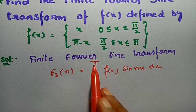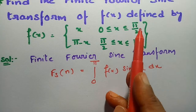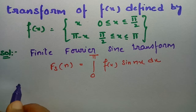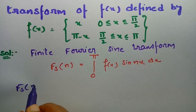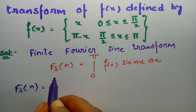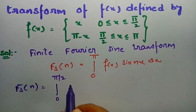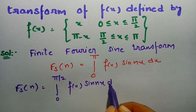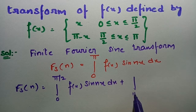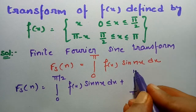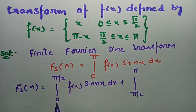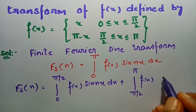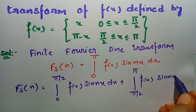In between 0 to π there is another limit π/2, so I will introduce that. The Fourier sine transform of f(x) equals the integral from 0 to π/2 of f(x) · sin(nx) dx, plus the integral from π/2 to π of f(x) · sin(nx) dx.